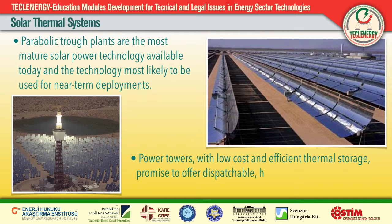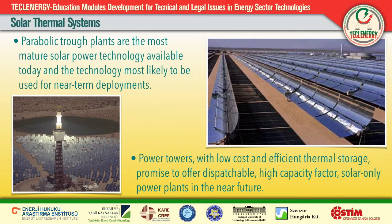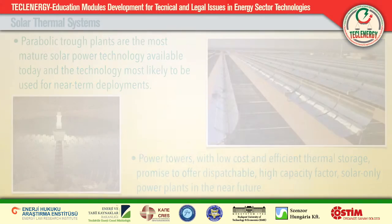Some systems use thermal storage during cloudy periods or at night; others can be combined with natural gas, and the resulting hybrid power plants provide high-value and dispatchable power. There are four main types of concentrating solar power systems, which differ in their mirror configurations: the parabolic solar trough, Fresnel reflectors, the solar power tower, and solar dish or parabolic dish/engine units.